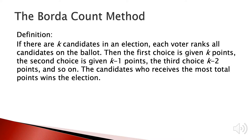The Borda count method is defined as follows: if there are k candidates in an election, each voter ranks all candidates on the ballot. The first choice is given k points, the second choice is given k minus 1 points, the third choice given k minus 2 points, and so on. The candidate who receives the most total points wins the election.